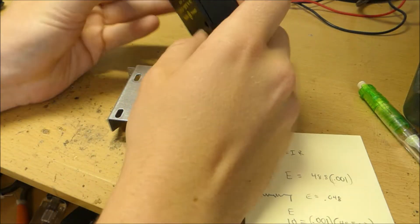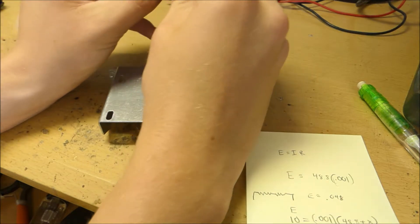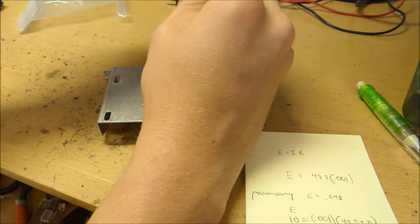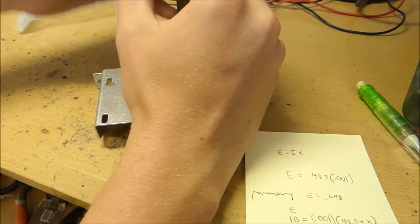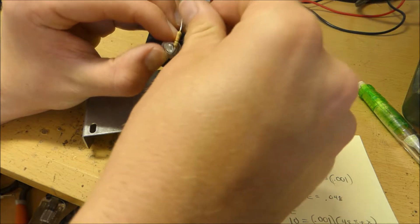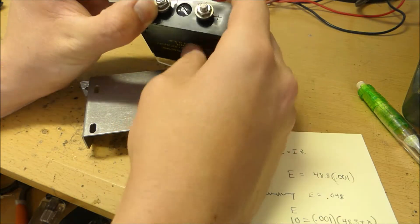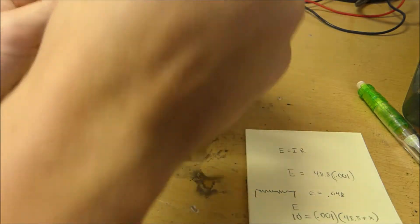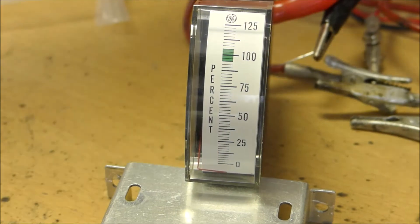If I take this 10k resistor and put it in series with my little meter, we should be able to see how we can actually see that result when we put 10 volts across it. We'll see 1 milliamp across it and we'll also see it function properly. Alright, with 0 volts across it, you can see that the needle is all the way at the bottom.